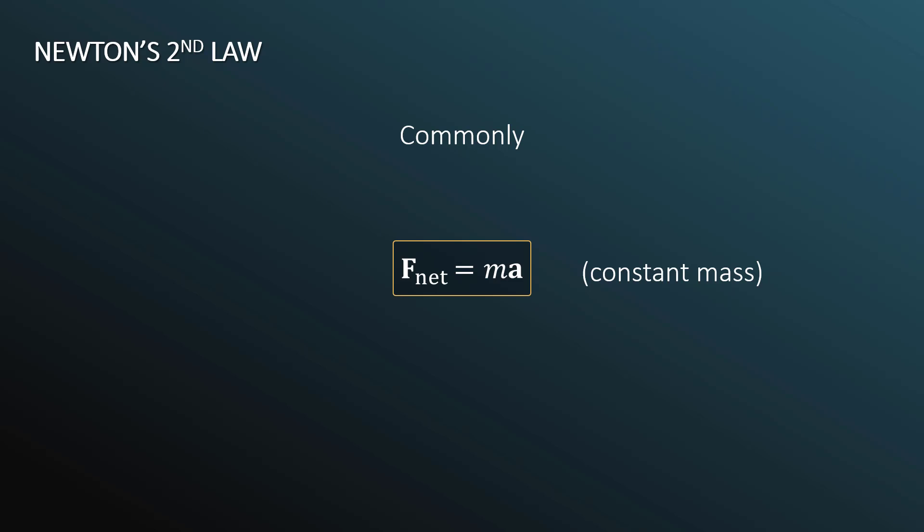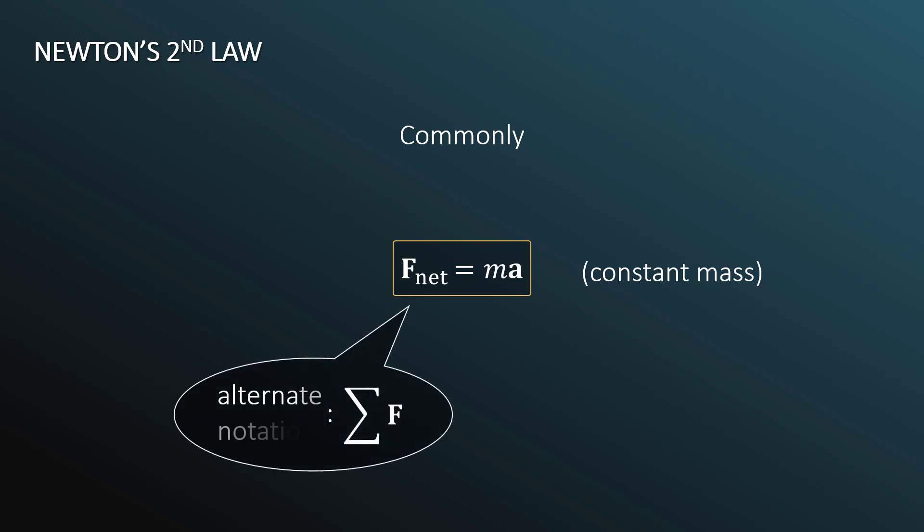Commonly, Newton's Second Law is written as F-net equals mass multiplied by acceleration. An alternate notation uses the capital Greek sigma in front of F to indicate the sum of all forces, because F-net, the net force, is the sum of all the forces.